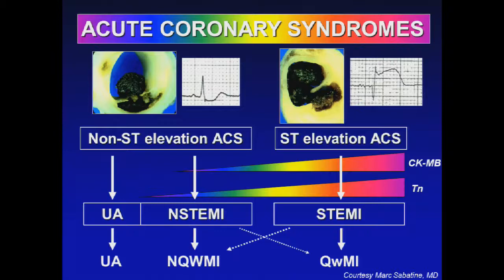When we talk about acute coronary syndromes in general, we're talking about myocardial infarction, either with ST elevations or without ST elevations, and also patients with unstable angina. It's helpful to think about the pathophysiology that underlies these syndromes so that we can have some common vocabulary.